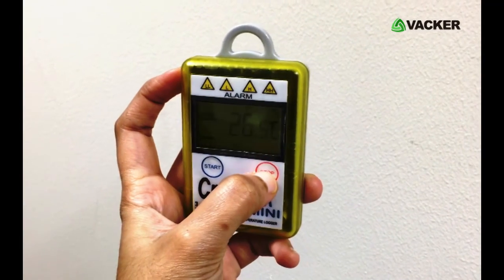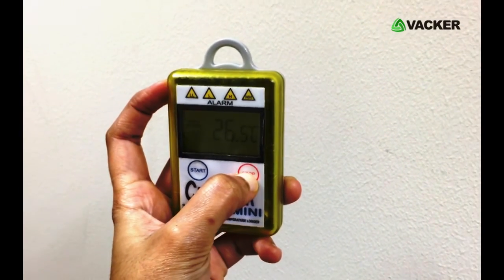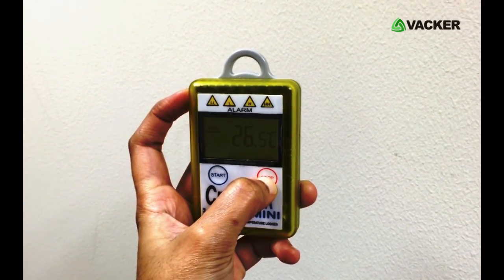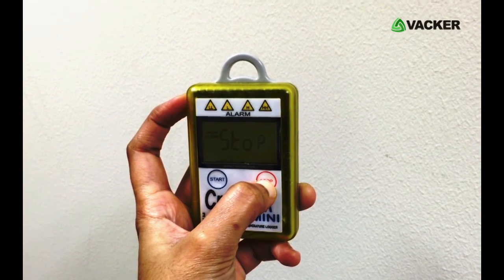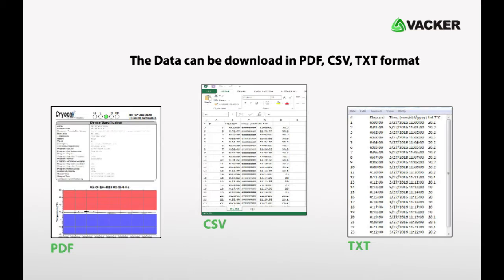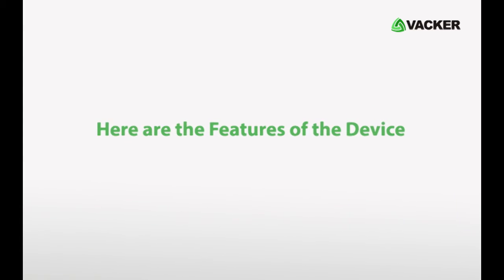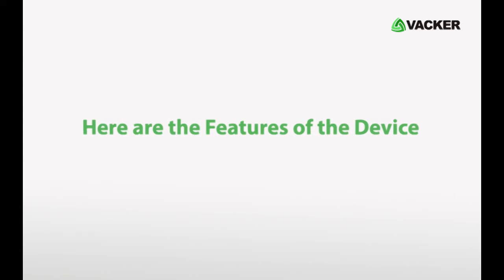To turn off the data logger, hold the stop button and you will see the word 'stop' on the screen. You can download the data in PDF, TXT, and CSV format.